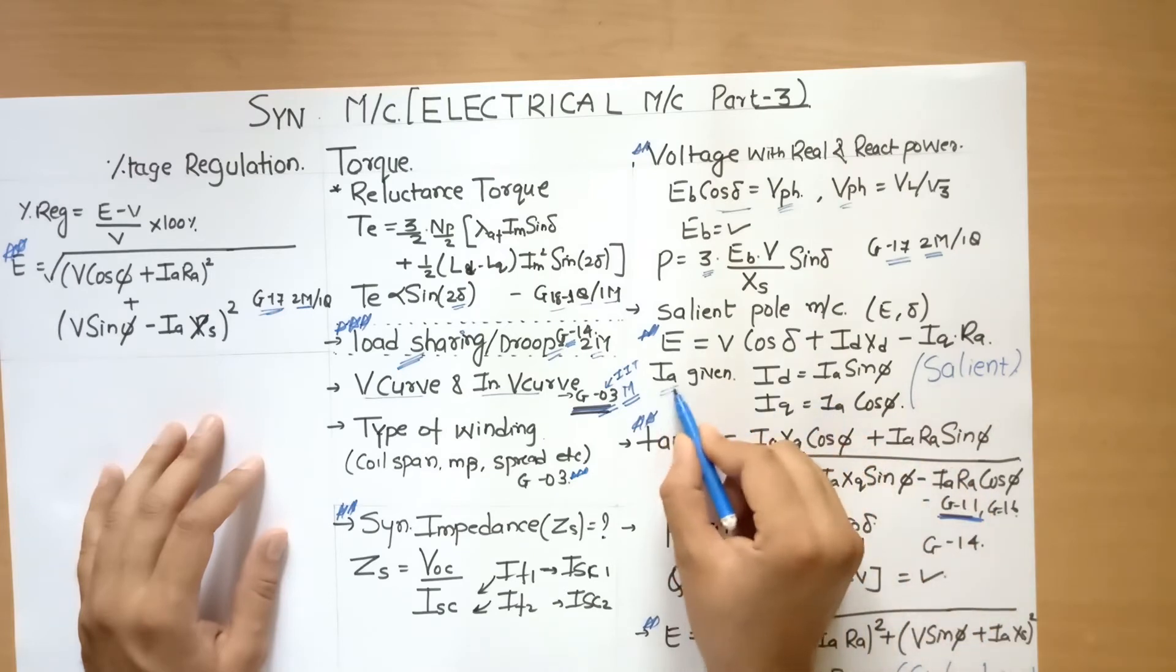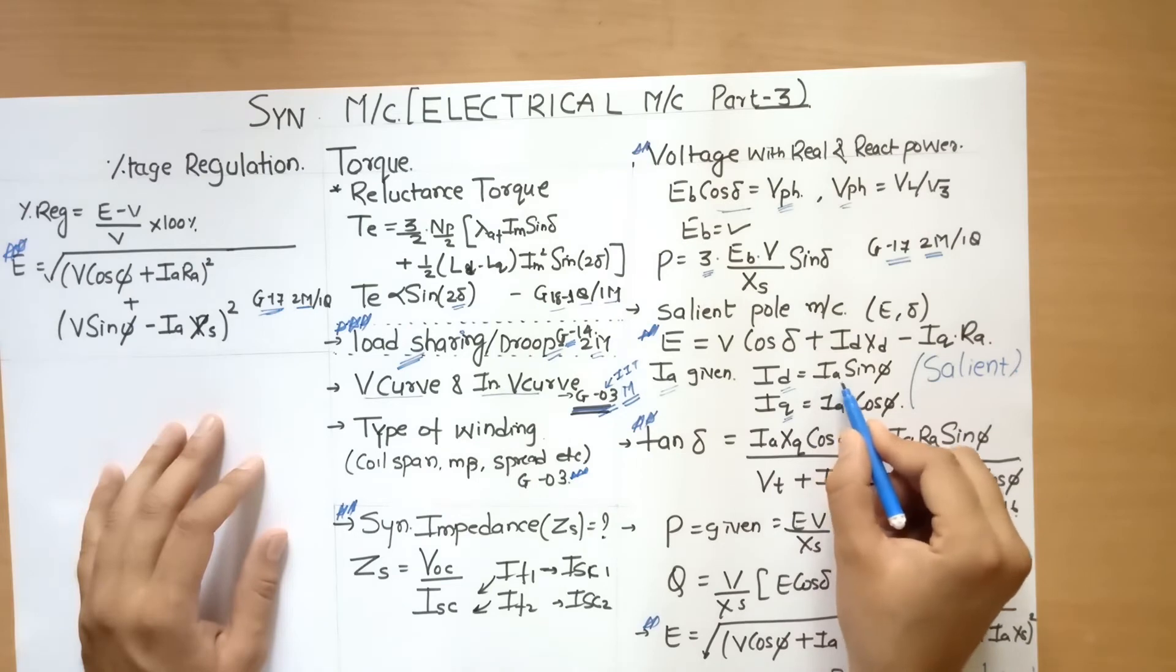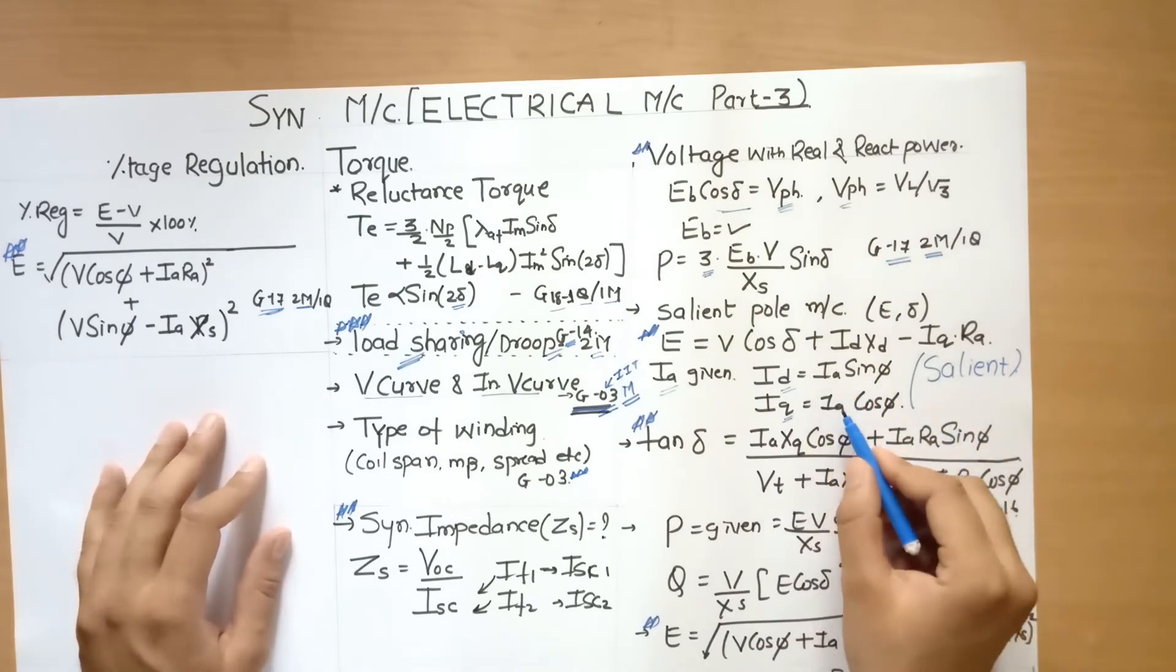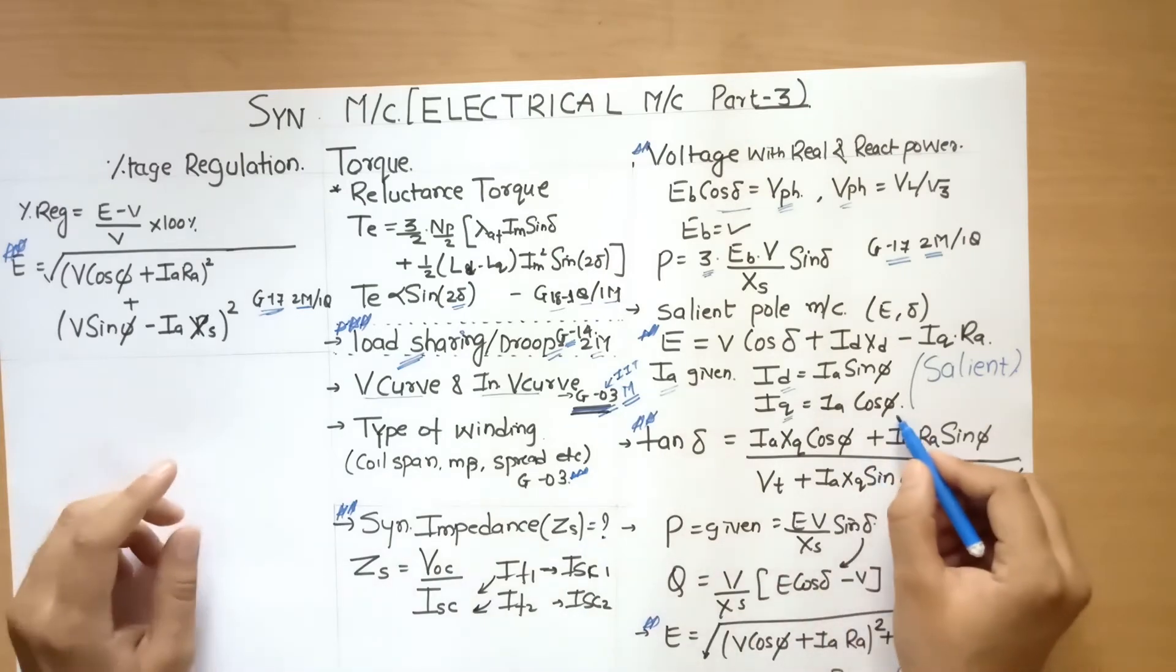Over here, Ia was given, then you have to find out Id and Iq, which is given by Ia sin delta and Iq equal to Ia cos delta. You need to find out.